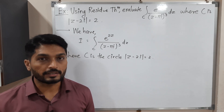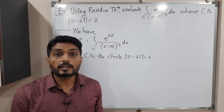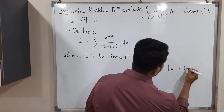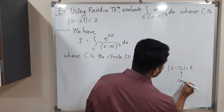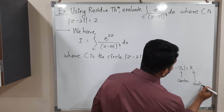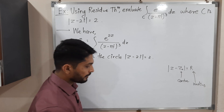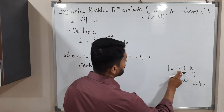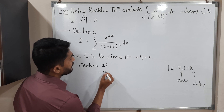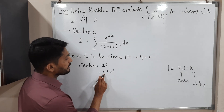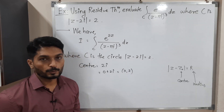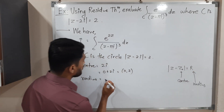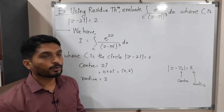To draw the circle we need to know its center and radius. I will compare the given equation with the standard equation of a circle. The standard equation is |z minus z₀| = r, where z₀ is the center and r is the radius. Comparing, the center z₀ is 2i, which means the point (0, 2), and the radius r is equal to 2.